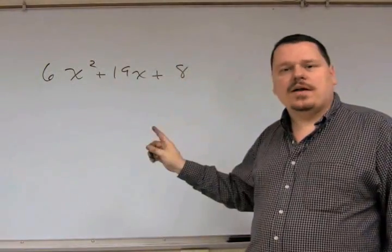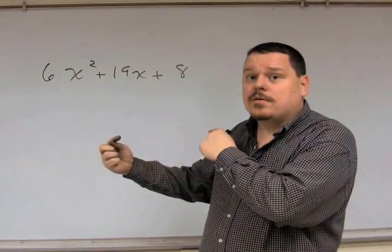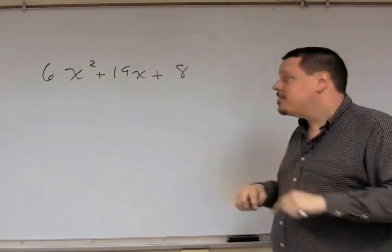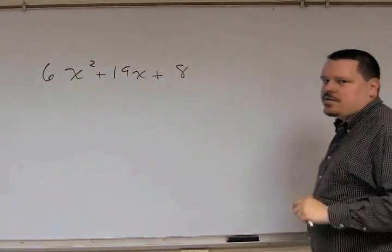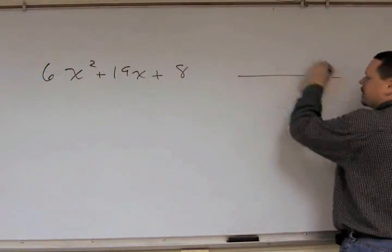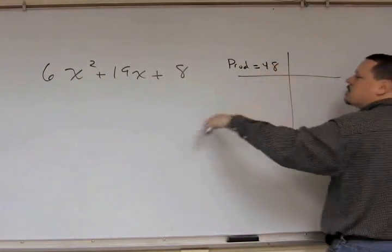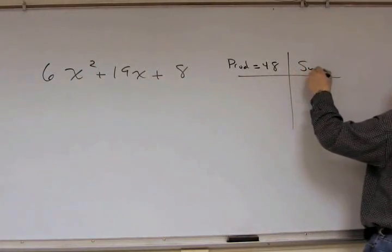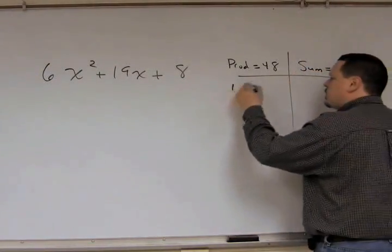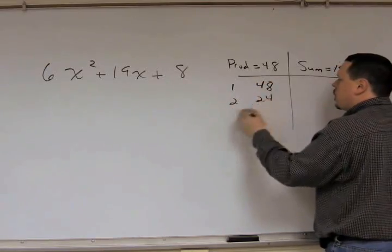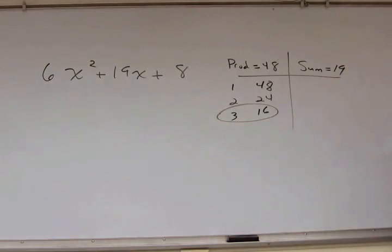So, we're now going to go through an example. This will be the final example because my battery is about ready to die. And it's a good thing we're going through the short method. So, we have 6x squared plus 19x plus 8. What you're still going to need to do is find the product of two numbers, which is 6 times 8, which is 48. The sum will be 19. So, you go through the list. 1 and 48. 2 and 24. 3 and 16. Hey, there's our pair.